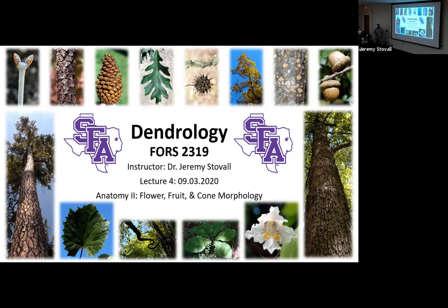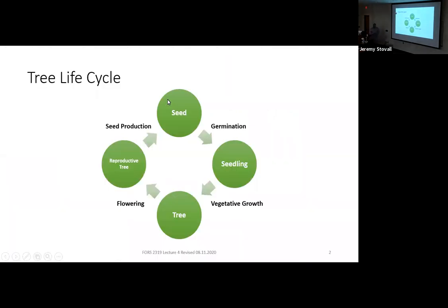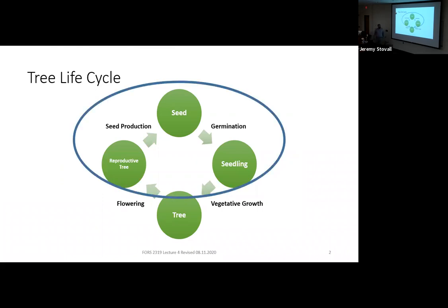We covered vegetative morphology last class, and today we're going to extend from there and talk about the other portion of the life cycle of a tree, which includes the tree getting to reproductive maturity, producing seed, and that seed germinating.